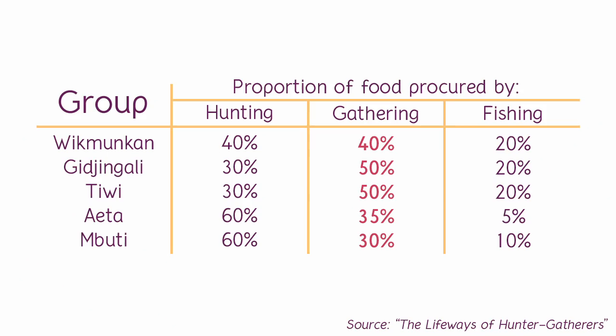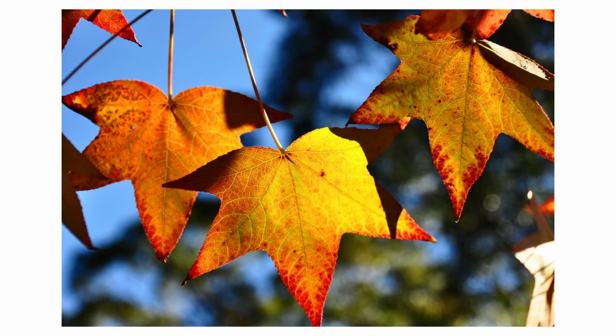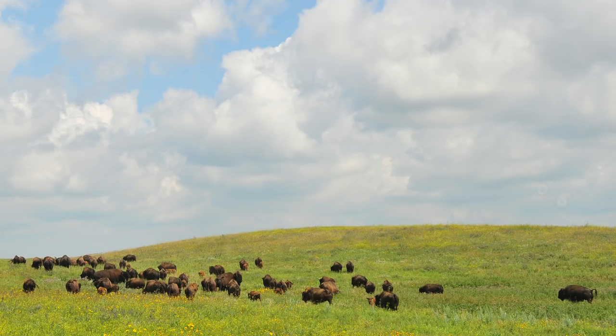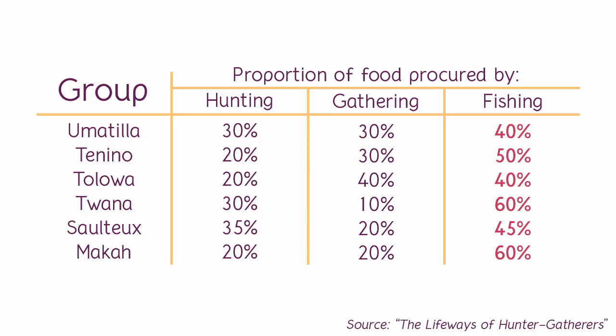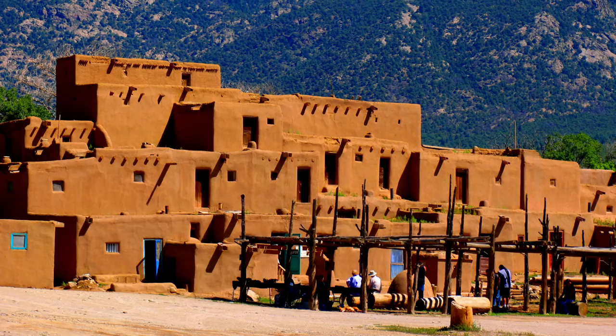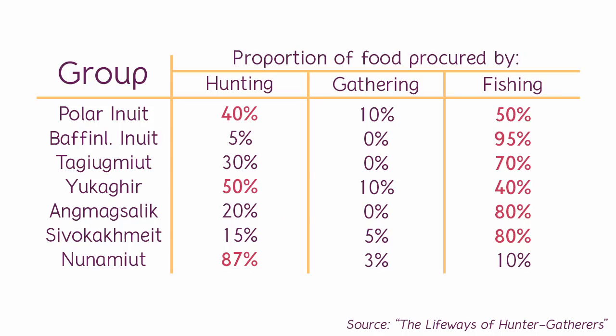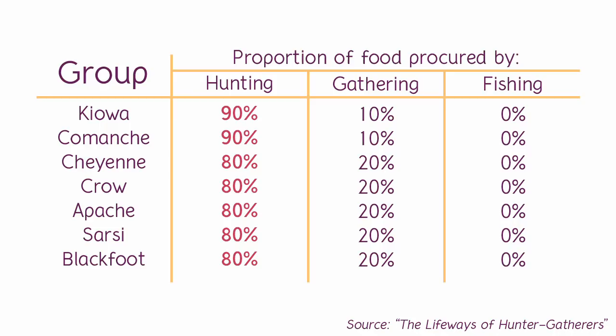As we move into the more temperate climates, we get groups that compensate for the low returns from gathering with a lot of fishing. And if they're stuck inland, or there are horticulturalists around for trading with, we have groups that have large territories and hunt a lot of game. Once we get to the Arctic, there's an enormous reliance on hunting and fishing, with gathering going down all the way to 0% in a few cases.